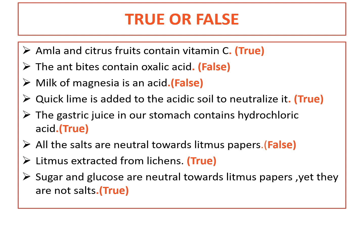Milk of magnesia is an acid — that is wrong, that is false. Quicklime is added to acidic soil to neutralize it — that is true. To neutralize the acidic content of the soil, we add quicklime. The gastric juice in our stomach contains hydrochloric acid — that is also true, because one type of acid is present in our stomach, known as hydrochloric acid.